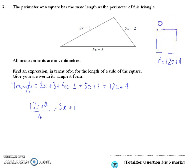So each one of these sides must be 3x plus 1, etc. all the way around. So therefore, the expression in terms of x for the length of a side of a square for one side, it's just going to be 3x plus 1. And that's it, we're done.